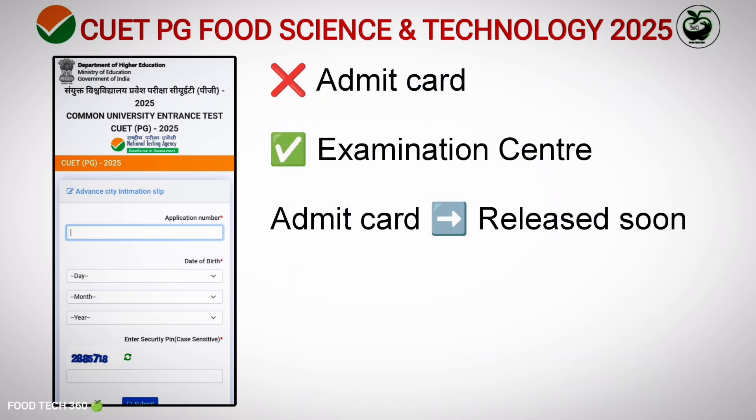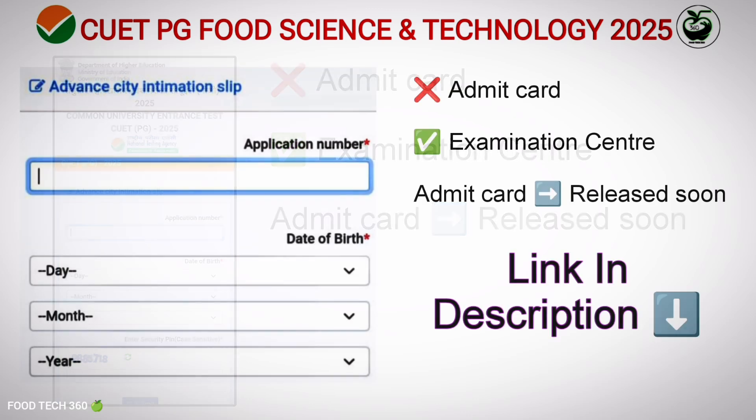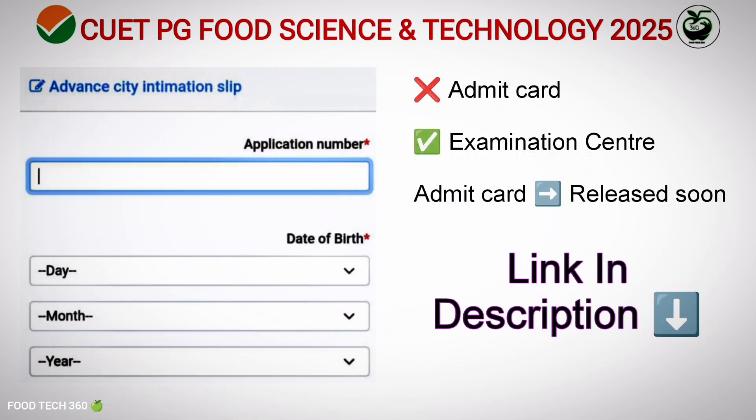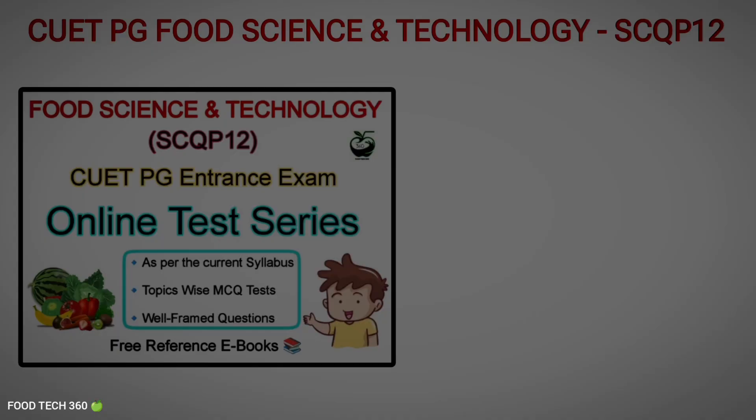This slip indicates where the examination center will be located, to facilitate the candidates. The admit card for the entrance examination will be issued shortly. The direct link for the advanced city intimation slip is given in the description of this video.